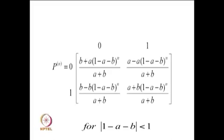By induction we can find p to the power m, and using p^m we can find p^(m+n), giving the n-step transition probabilities from 0 to 1, 0 to 0, and so on. The result is: p(0→1) = [b + a(1-a-b)^n] / (a+b), and p(0→0) = [a - a(1-a-b)^n] / (a+b). Similarly, p(1→0) = [b - b(1-a-b)^n] / (a+b), and p(1→1) = [a + b(1-a-b)^n] / (a+b).